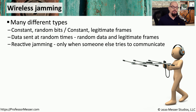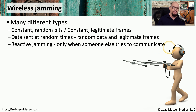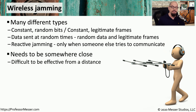The attacker may be intermittently sending random data or intermittently sending legitimate frames to disrupt the normal flow of communication. The attacker might also only send jamming signals when someone else tries to communicate on the network, effectively targeting one individual device and limiting that device from communicating on the network.